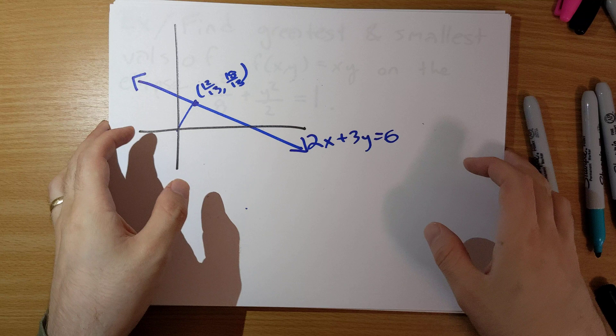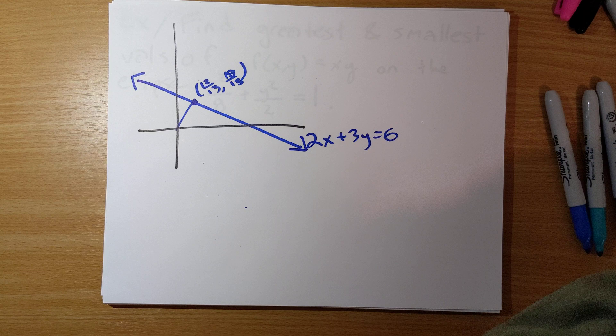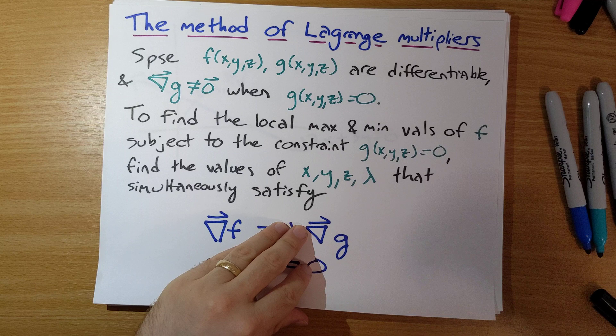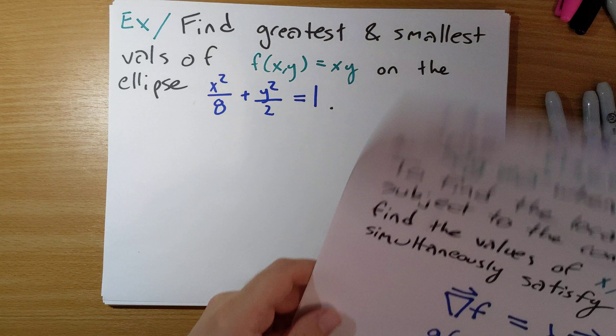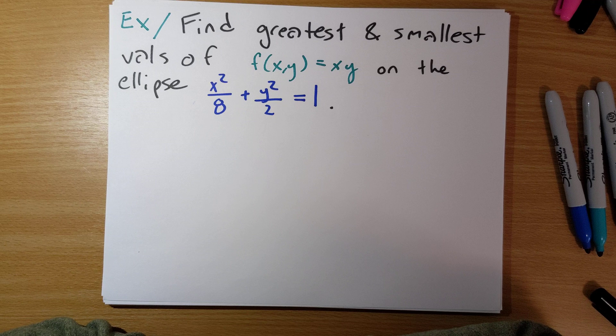That is our first example of Lagrange multipliers. You might wonder why we bother with this rather complicated method when we could solve things using calculus 1 methods. Well, eventually things will get more and more complicated. So let's do a second example: find the greatest and smallest values of f of x, y equals x times y on the ellipse x squared over 8 plus y squared over 2 equals 1.